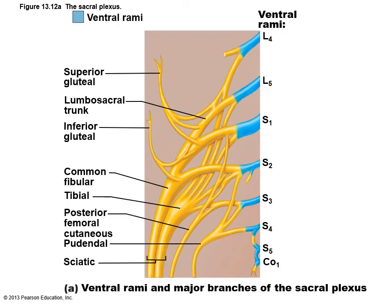The sacral plexus serves the buttock region, lower limb, pelvic structures, and perineum. The largest and thickest nerve of the body is located in this plexus — the sciatic nerve — which is actually composed of two nerves coming together: the common fibular nerve and the tibial nerve together make up the sciatic nerve.